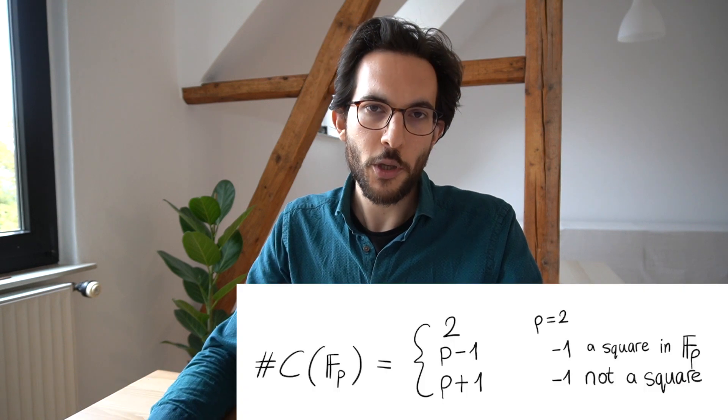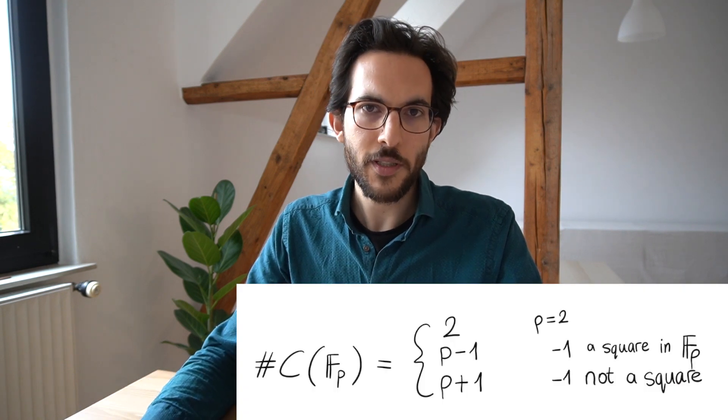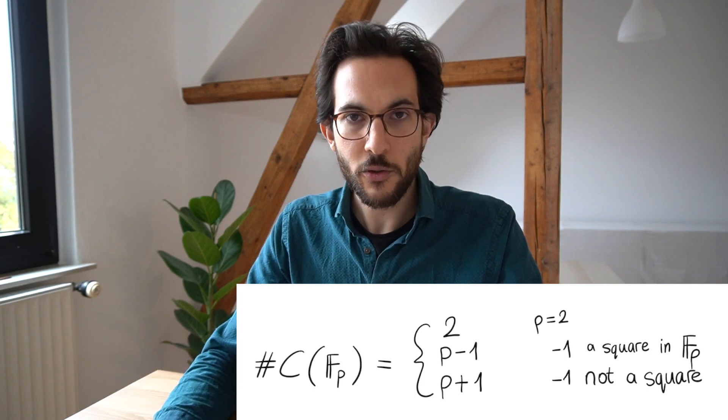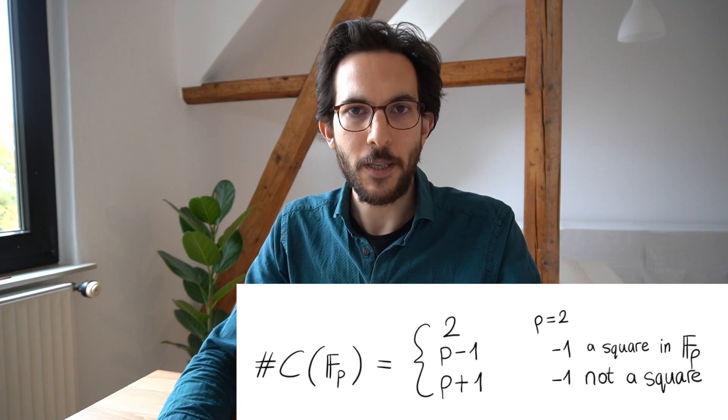Over finite fields, when counting points on the circle, there was a dichotomy about whether minus one was a quadratic residue modulo a prime. Depending on this, the number of points on the circle followed a different formula: P minus one versus P plus one. Once we projectivize the circle, there is a uniform formula — it will always be P plus one for any P. There is no longer a dichotomy; adding the boundary at infinity removes the extra hidden data, and the answer becomes much simpler.